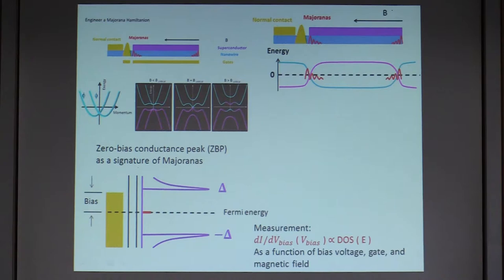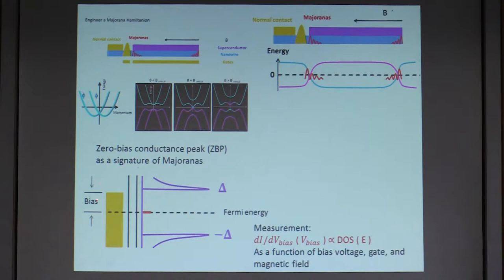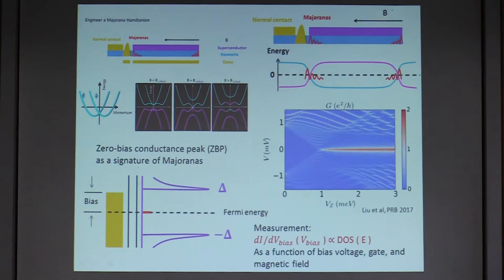To detect this Majorana bound state, we add a contact and measure the conductance. The left side is a normal contact — just a regular Fermi sea — and the right side is the topological superconductor part, which is gapped. In the middle, there is the Majorana bound state at zero energy. If we pass a current from left to right through this tunnel barrier, when the bias is zero, aligned with the Majorana energy, you have excess current. In terms of differential conductance dI/dV, you will see a conductance enhancement — a conductance peak. Because dI/dV in the tunnel regime is proportional to the density of states, and you have a state at zero energy, you see a dI/dV peak at zero energy.